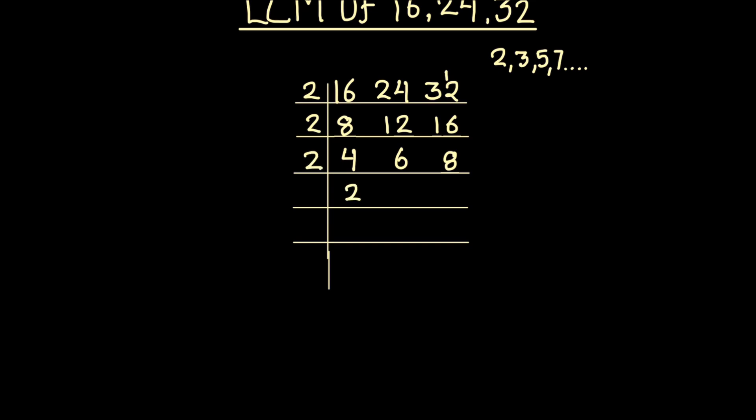We continue dividing until we fully divide all three numbers. Dividing again by 2: 2 times 2 is 4, 2 times 3 is 6, 2 times 4 is 8. Now we can divide 2 and 4 by 2: 2 times 1 is 2. The number 3 is left as is because it is a prime number and is not fully divisible by 2. And 2 times 2 is 4.